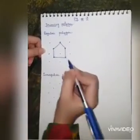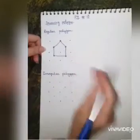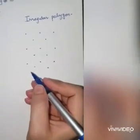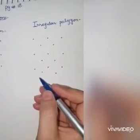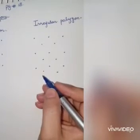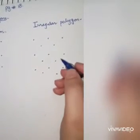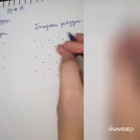You can see all angles and sides are equal. Now to draw an irregular pentagon, mark five vertices the same as a regular pentagon, but make sure the figure is still a closed figure.